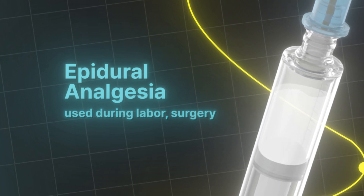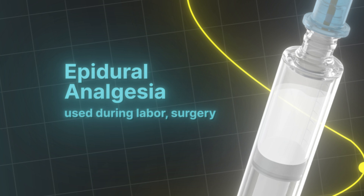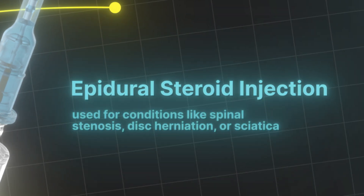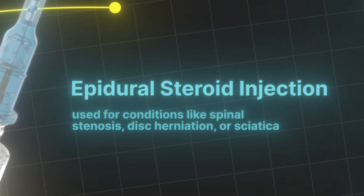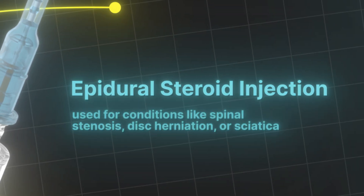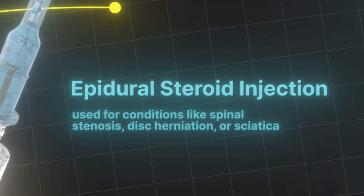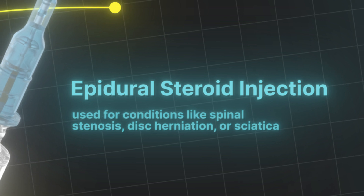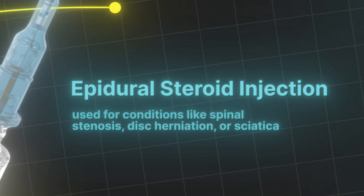The other type of epidural is an epidural steroid injection, or ESI, which is the type of injection given for patients who have back pain and sciatica for pain relief. The two share a lot of similarities, but they also have a lot of differences between them.